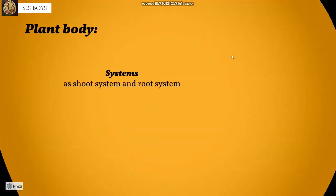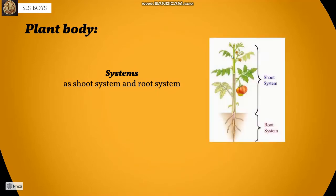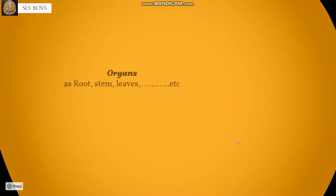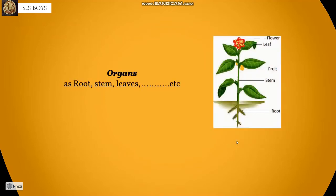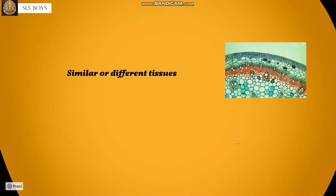The plant body also consists of systems, like the shoot system or root system, as you can see in the picture. These systems consist of organs such as roots, stem, leaves, or flowers. The organs consist of similar or different tissues.